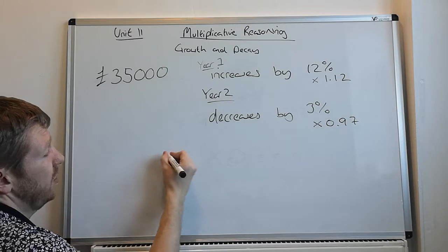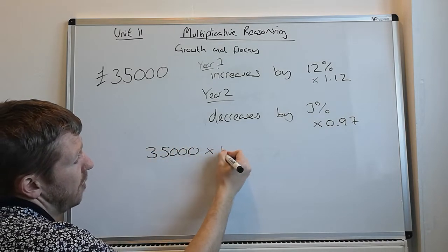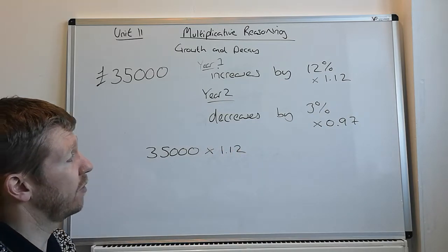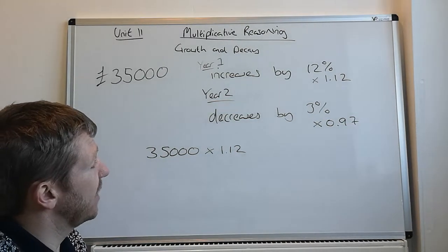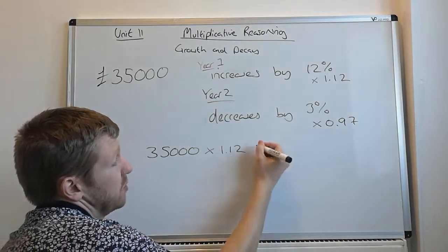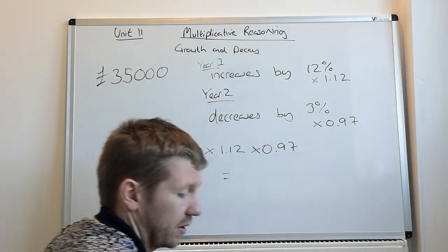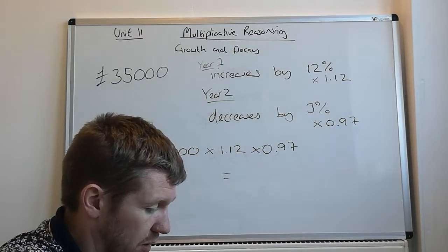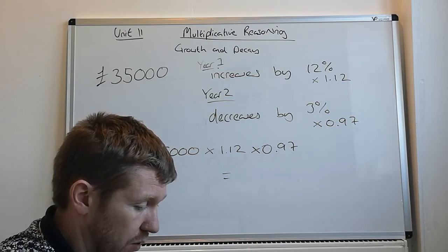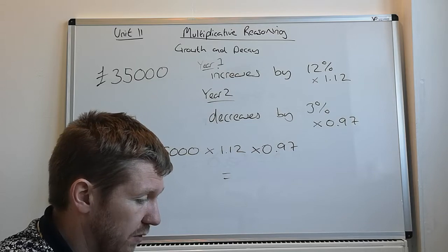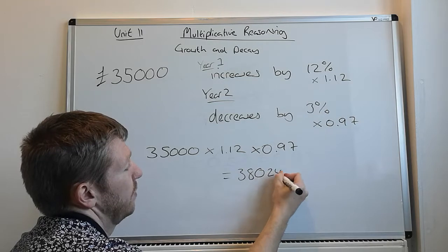So, you can do this in one go. You can do 35,000 times by 1.12. That will give you the amount after year one. If you want to, you can write that number down. And then when you get that answer, you're going to need to multiply it by 0.97. So I'm just going to do it on the calculator, because surprisingly, I can't do that in my head.